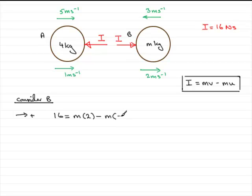And if we work out this equation we've got 16 equals 2m plus another 3m. So we've got a total of 5m. So clearly m equals 16 fifths.